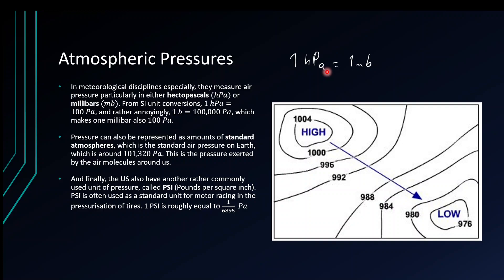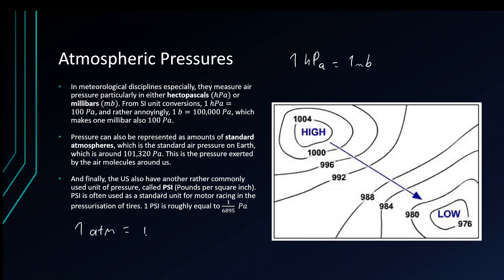So there's another two: we now have Pascals, kilopascals, Torr, hectopascals, and millibars all being used somewhat commonly. But then there's another unit known as a standard atmosphere. A standard atmosphere is sometimes approximated as one bar, but its actual value is 101,325 pascals — it's the pressure exerted by the air molecules around us. One atmosphere is written as ATM.